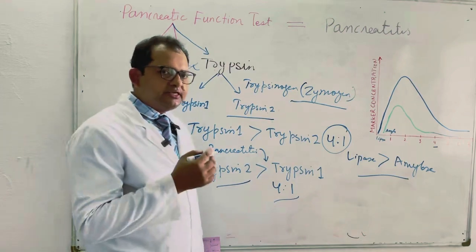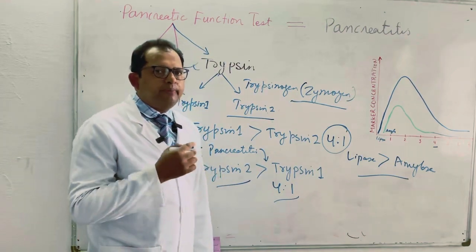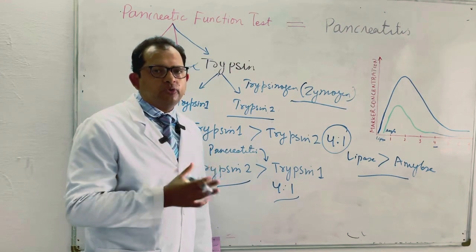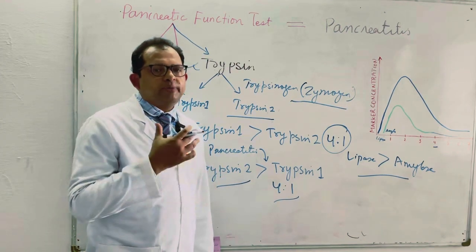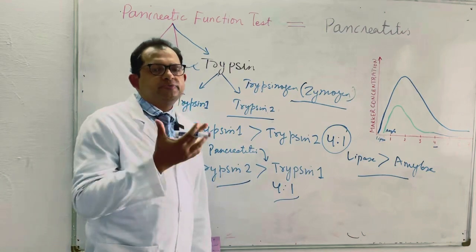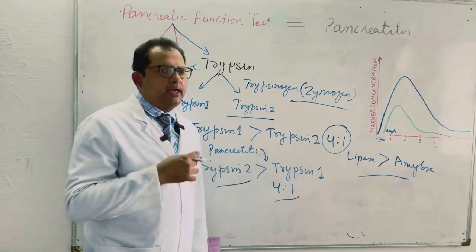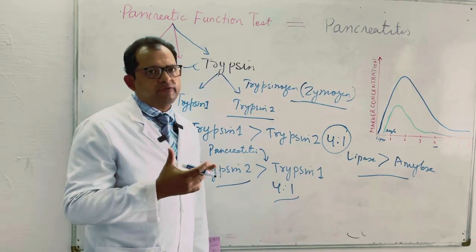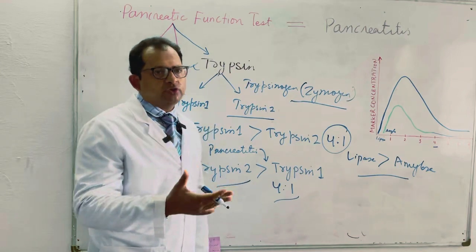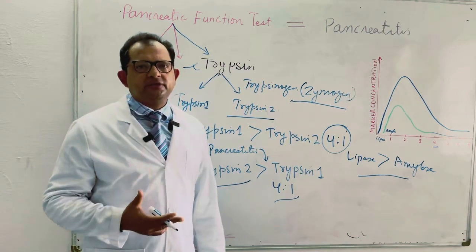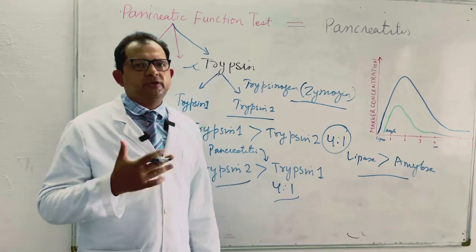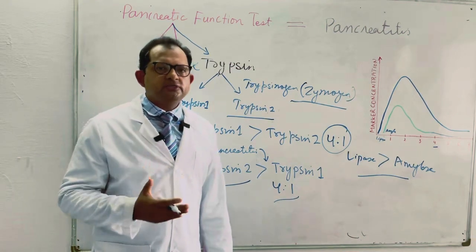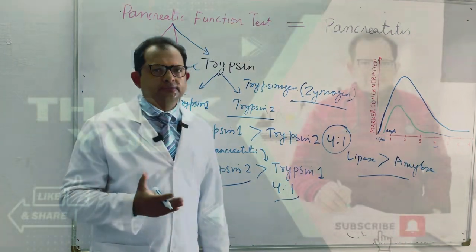In the case of cystic fibrosis, trypsin has significant value. Because the pancreatic duct is blocked by thick mucus, the trypsin level gets raised, which serves as a diagnostic criterion for cystic fibrosis, to be confirmed by further evaluation. I hope you have understood the pancreatic function test and its importance in the diagnosis of pancreatitis. Thank you very much for your attention.